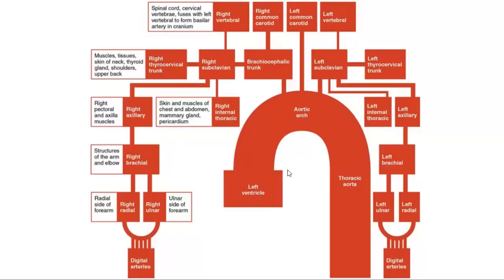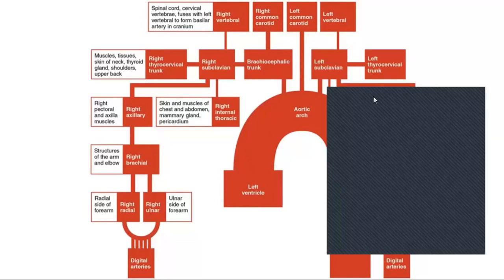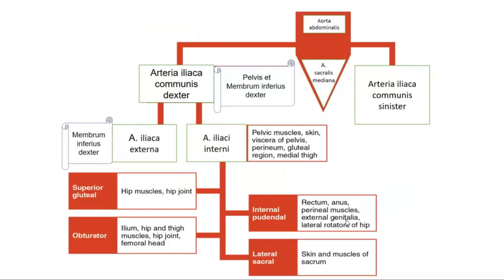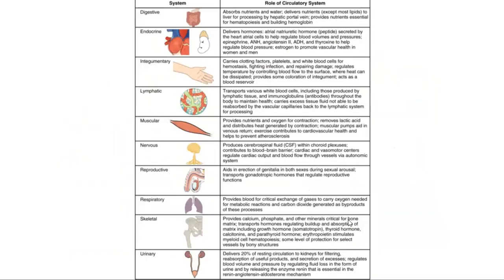In a schematic diagram of arterial supply, we can see: left ventricle, ascending aorta, arch of aorta, descending thoracic aorta. From the aortic arch arise three vessels: the brachiocephalic trunk, left common carotid artery, and the thoracic aorta. Such schematics can be created for different regions of the body.